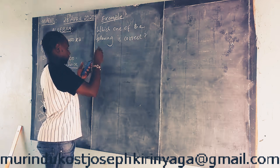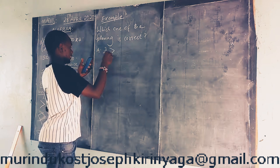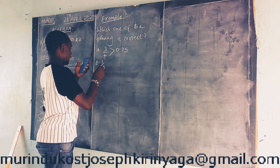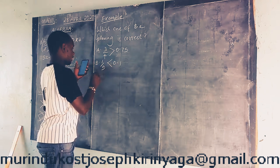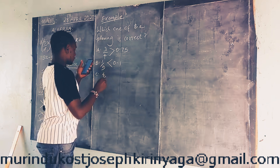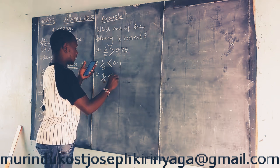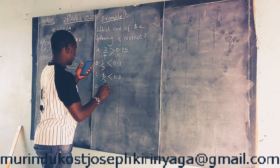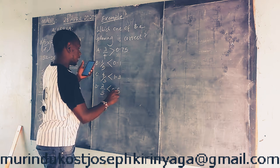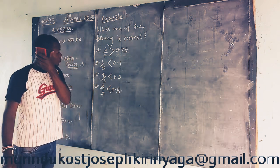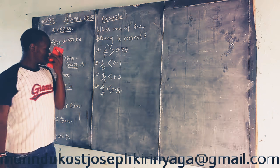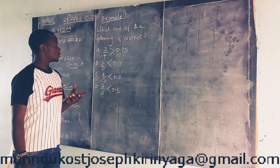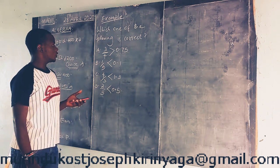Choice A: 3 over 4 is greater than 0.75. Choice B: 1 over 9 is greater than 0.1. Choice C: 4 over 3 is greater than 1.3. In inequalities, we should make these values similar — if it is a fraction they should all be fractions, and if it is a decimal you make all values decimals.